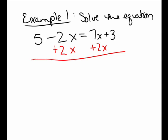I'm going to bring all my x's over to the right. I have a subtracting 2x right now, so I add 2x on both sides. That will remove it from the left side, leaving 5 on the left side of the equation. On the right side, I now have 7x plus 2x makes 9x, and I also have plus 3.